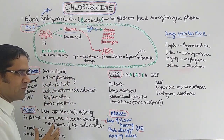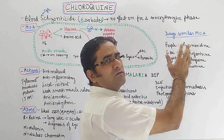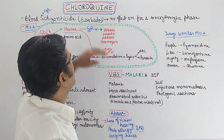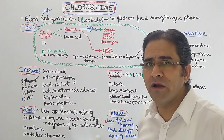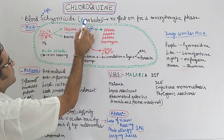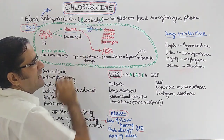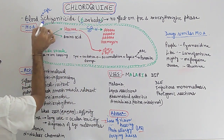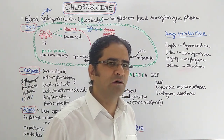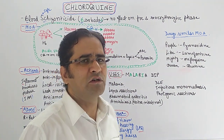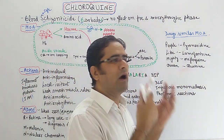The sections include mechanism of action of chloroquine, actions, pharmacokinetics, uses, adverse effects, and drugs with similar mechanism of action. The name of the drug is chloroquine. 'Queen' — queen of which city? The city is Barbados. The spelling starts with B and ends with S — BS — and BS represents blood schizonticide. So chloroquine is a blood schizonticide.